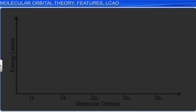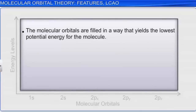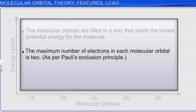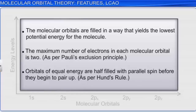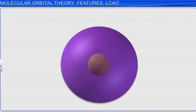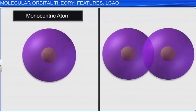Electron distribution in molecular orbitals takes place as per the Aufbau principle and obeys Pauli's exclusion principle and Hund's rule. The electrons in an atom are influenced by only one nucleus, forming monocentric atomic orbitals. However, the electrons distributed in molecular orbitals are influenced by the nuclei of all the atoms forming the molecule, causing the formation of polycentric molecular orbitals.